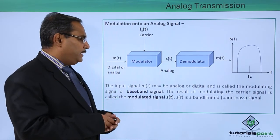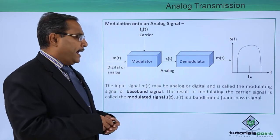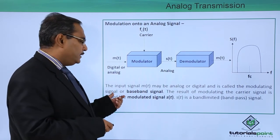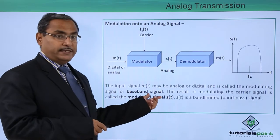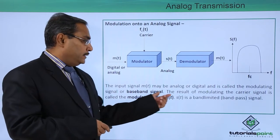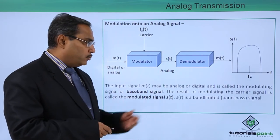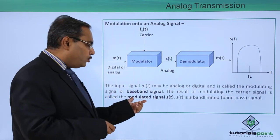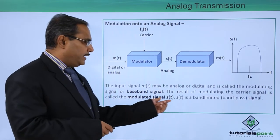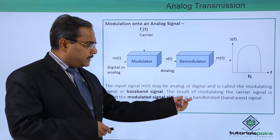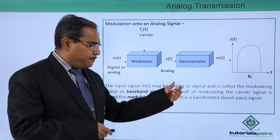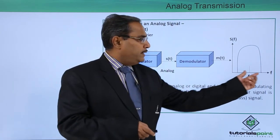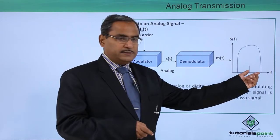The input signal m(t) may be analog or digital and is called the modulating signal or baseband signal. The result of modulating the carrier signal is called the modulated signal S(t). S(t) is a band-limited, that is a band-pass signal — here you can find that it is having a band-pass filter.